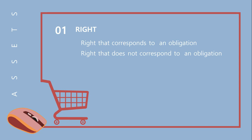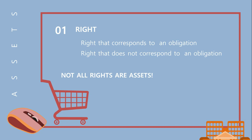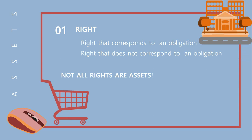One must remember that not all of the entity's rights are assets. To be an asset, the right needs to have the potential to produce economic benefits for and in the control of the entity. For example, all entities have the right to use the public highway, but such a right does not provide any exclusive benefit to the entity itself and is not controlled by the entity, so this is not considered an asset.